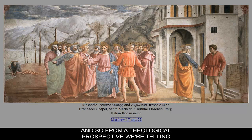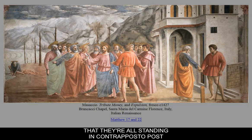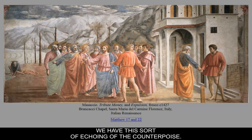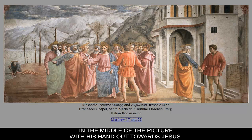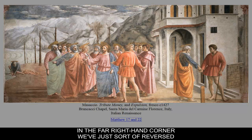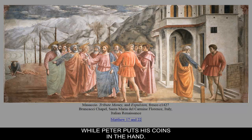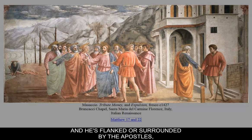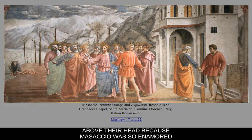From a theological perspective, we are telling the story of Jesus from a classical perspective. First of all, they're all standing in contrapposto pose — just like the figure of the Doryphoros we studied earlier — standing in a counter-pose that looks more lifelike. There's an echoing of the contrapposto in the center figure. The tax collector is in the middle of the picture with his hand out towards Jesus on the far right. On the far left, we see Peter pulling the coins out of the fish's mouth down by the water. Jesus is in the center of the picture, flanked by the apostles, all with those elliptical halos above their heads because Masaccio was so enamored with perspective.